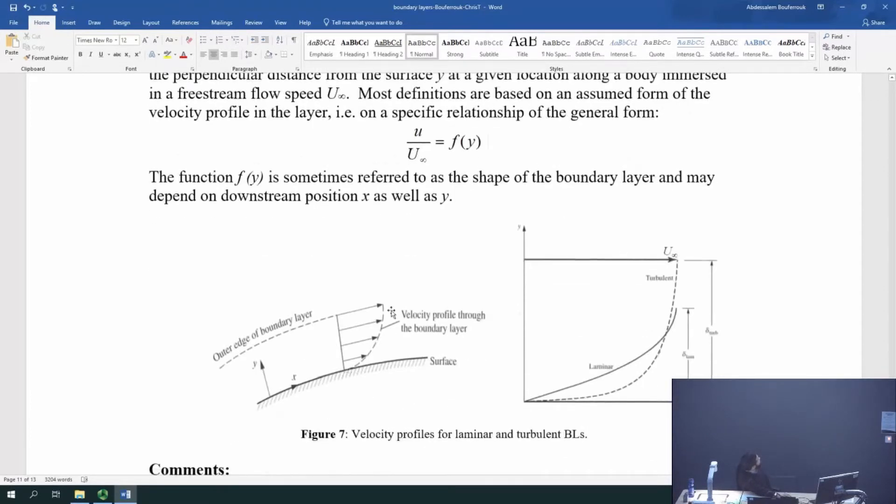And in general, a boundary layer looks like this. So, this is your surface, solid surface. The y is the vertical distance away from the surface. x is along the surface.